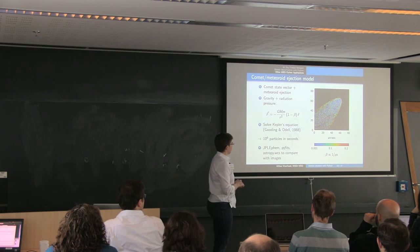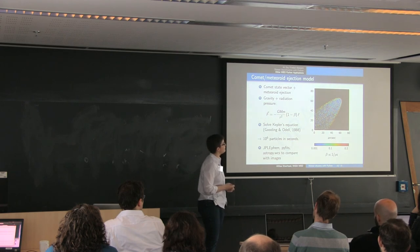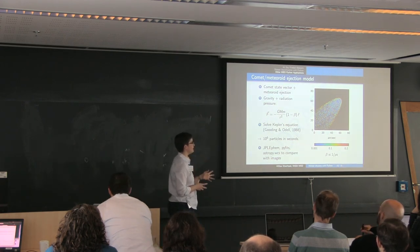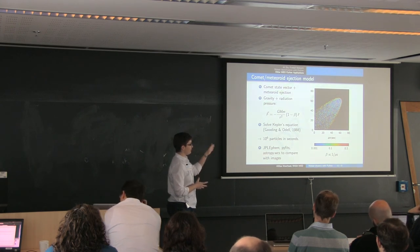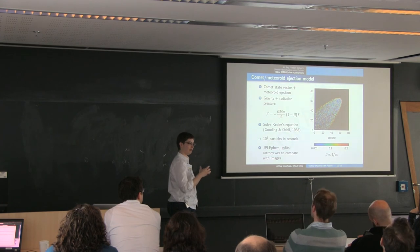And once you do that, you can then turn it into false images using things like PyFITS and WCS. So this has been very nice, and what we hope to do with this is fit the morphology of the comet and link it up with the physical processes like the ejection velocity. Because those are important inputs to our stream modeling.